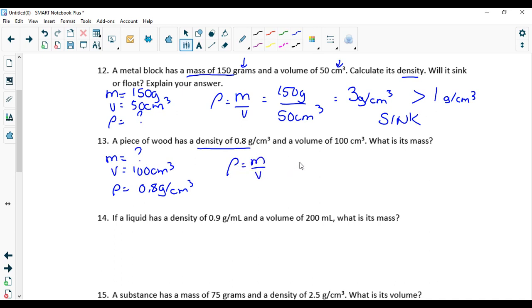Replace the letters with the numbers. So 0.8 grams per centimeter cube equals m, I don't know what m is, divided by the volume which is 100 centimeter cube. And now to find mass, I must bring this 100 up here. So 0.8 grams per centimeter cube times 100 centimeter cube.